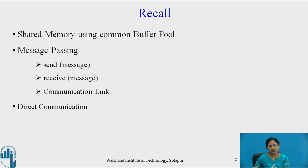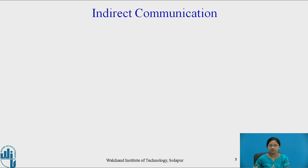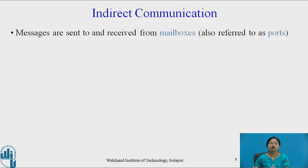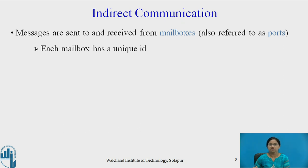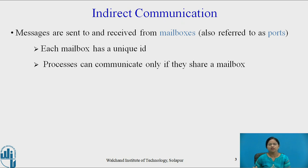Now let us see the next type of message passing communication: indirect communication. In indirect communication, messages are sent to and received from mailboxes, which are also referred to as ports. Each mailbox has a unique ID. That mailbox is created as an object where messages can be queued and removed by processes. The processes can communicate with each other only if they share a mailbox.